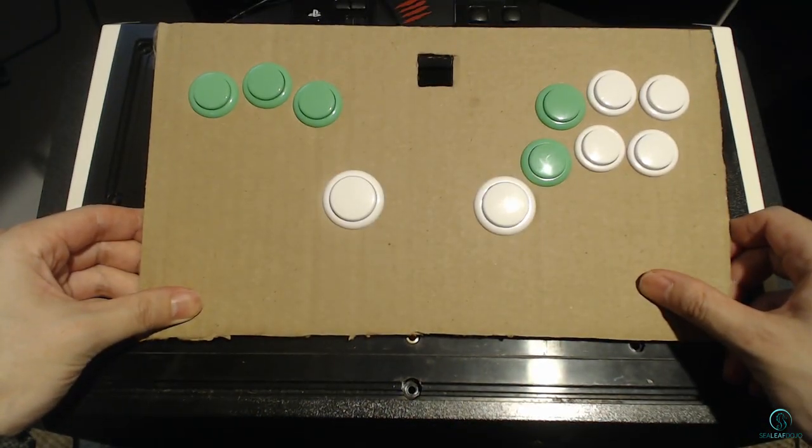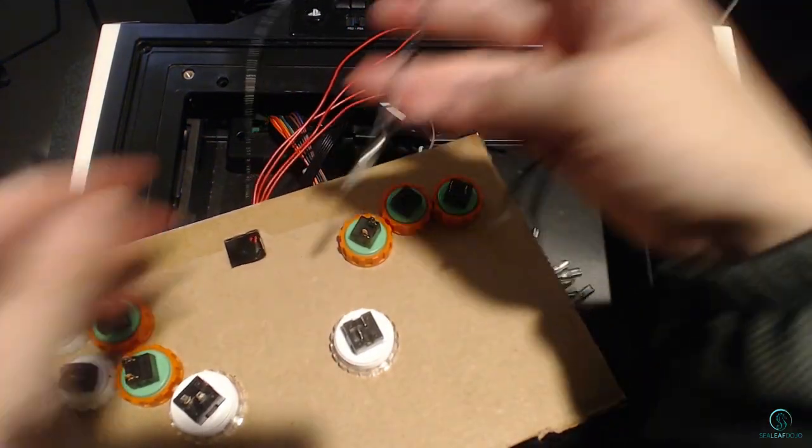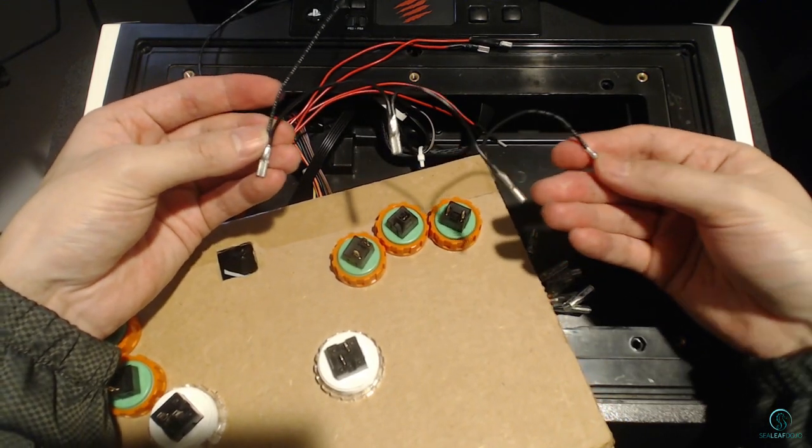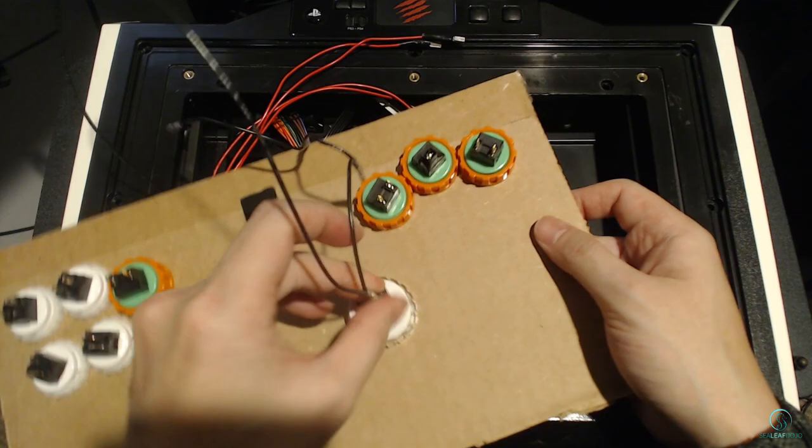Now let's connect all quick disconnects to the button terminals. Each button will need to be connected to the button signal wire and ground. As long as the pair of wires are on the same button, order and terminal should not matter.